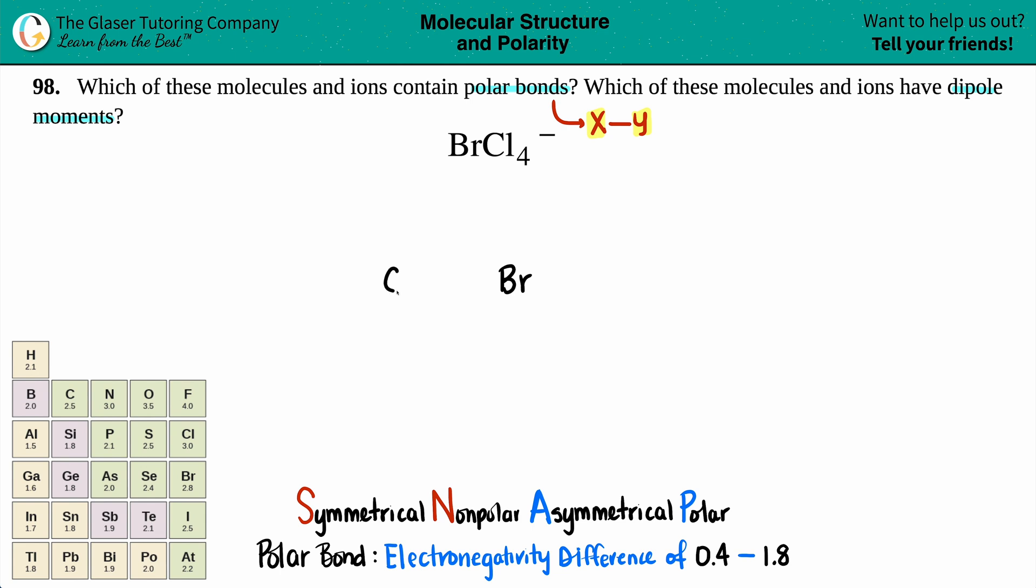In this case, we have bromine in the middle, so Br in the middle surrounded by the four chlorines: one, two, three, and four. Now we'll work on the chlorines. Each chlorine has to have a single bond because they have seven valence electrons.